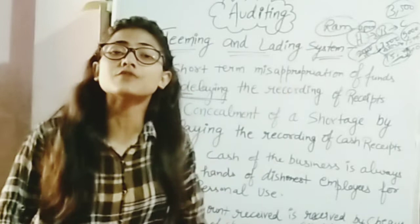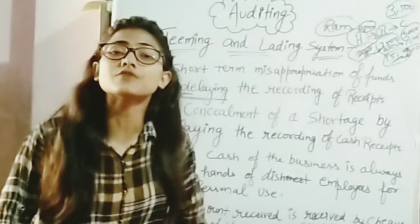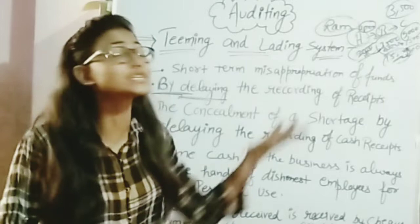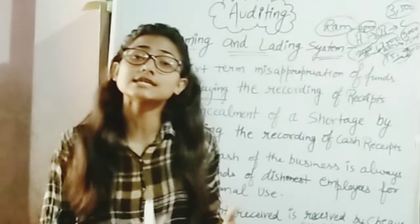Next, when B gave 3,500 rupees, the amount was used to make up the shortfall of 1,000 rupees. Before receiving it, the money had been used for personal purposes. This cycle continues for about 2 to 3 months. Each month, money from the next depositor is used to cover the previous shortage, and the recording of receipts is deliberately delayed.